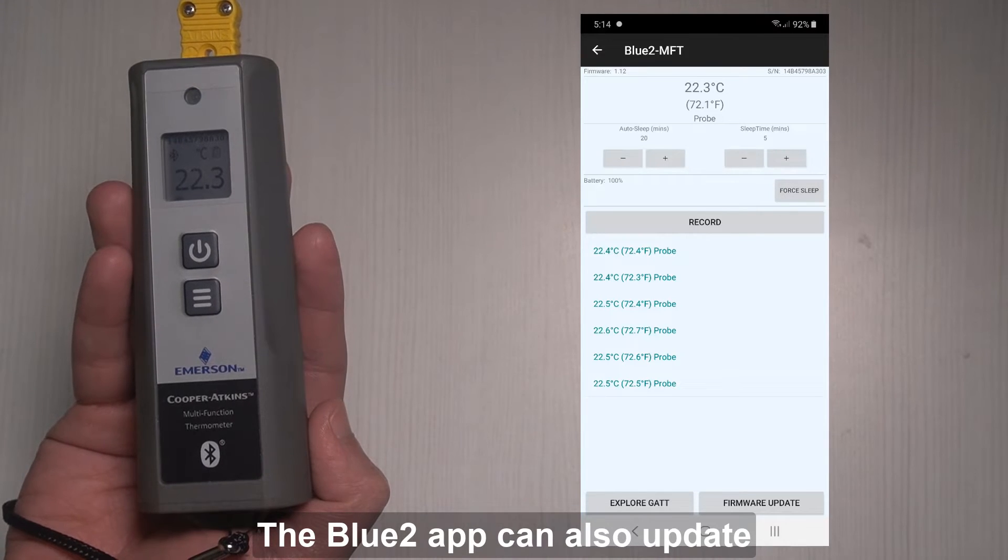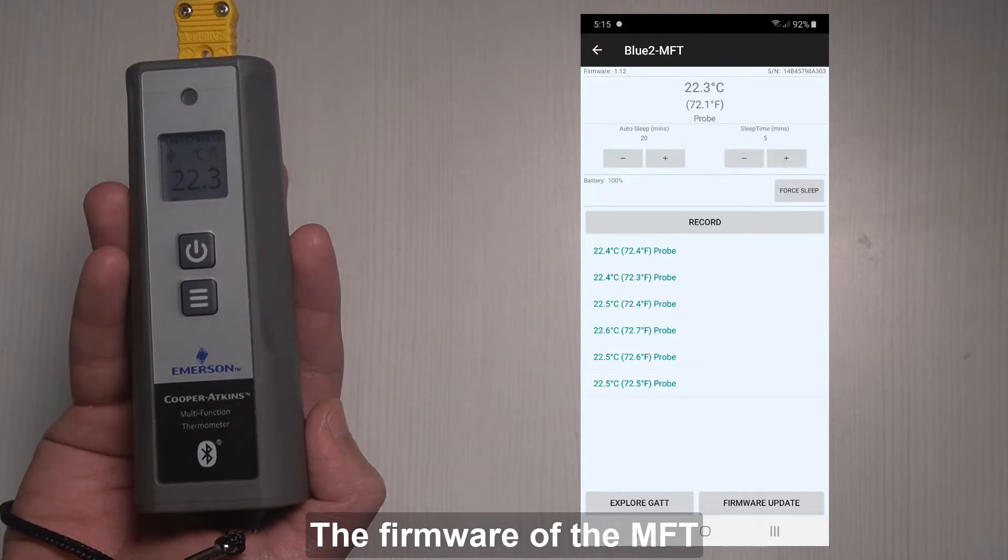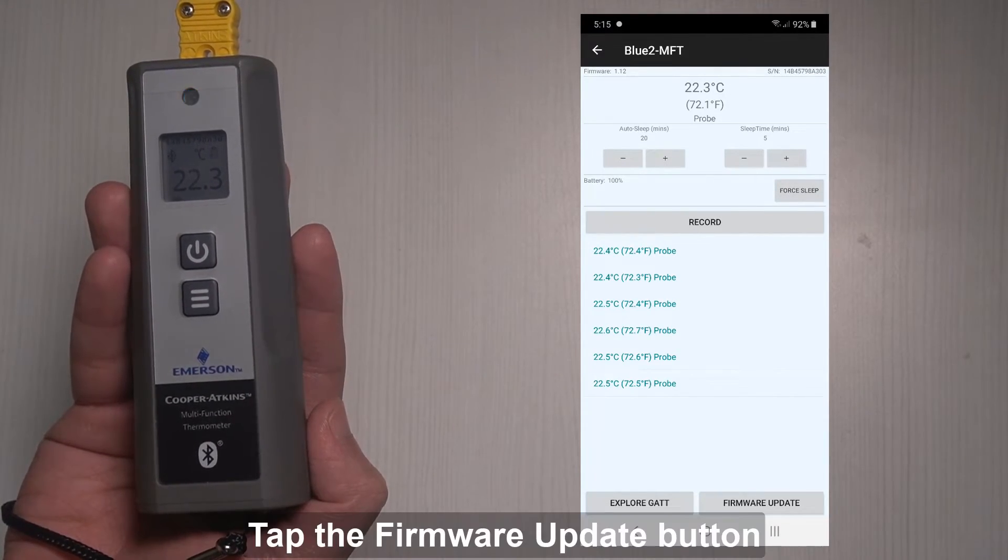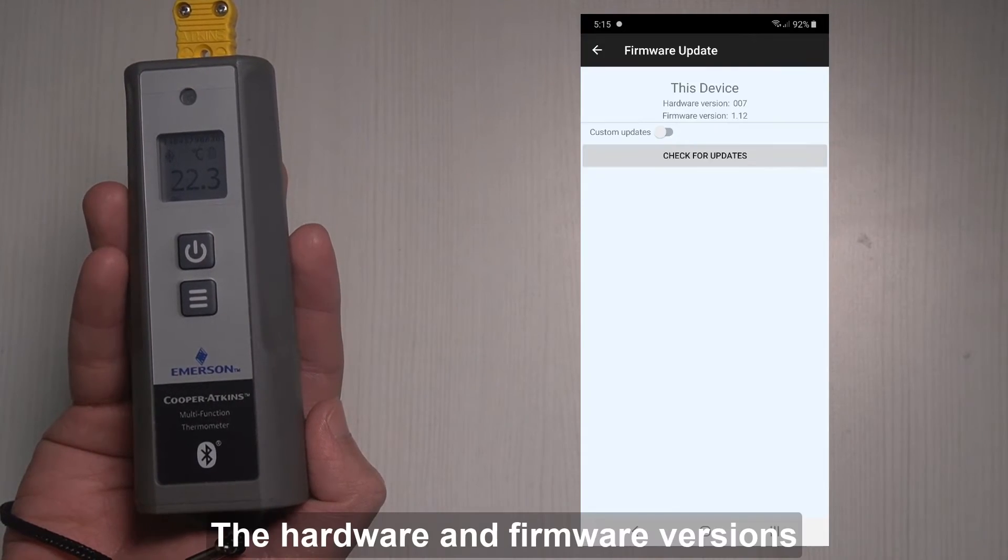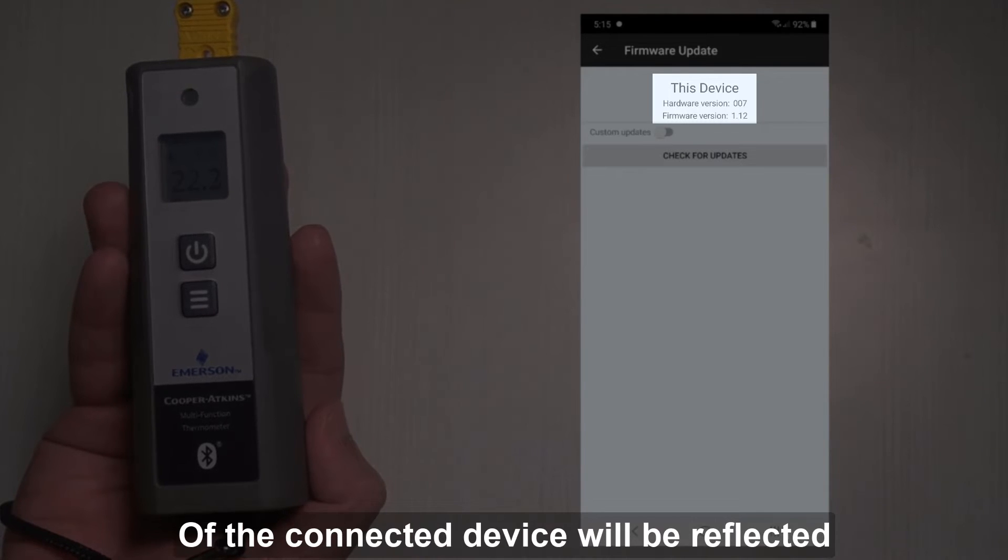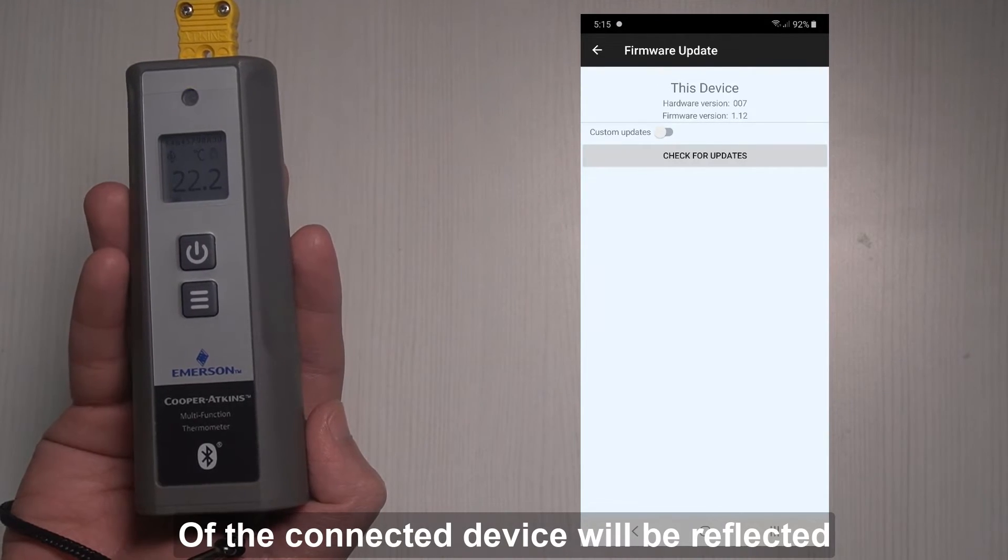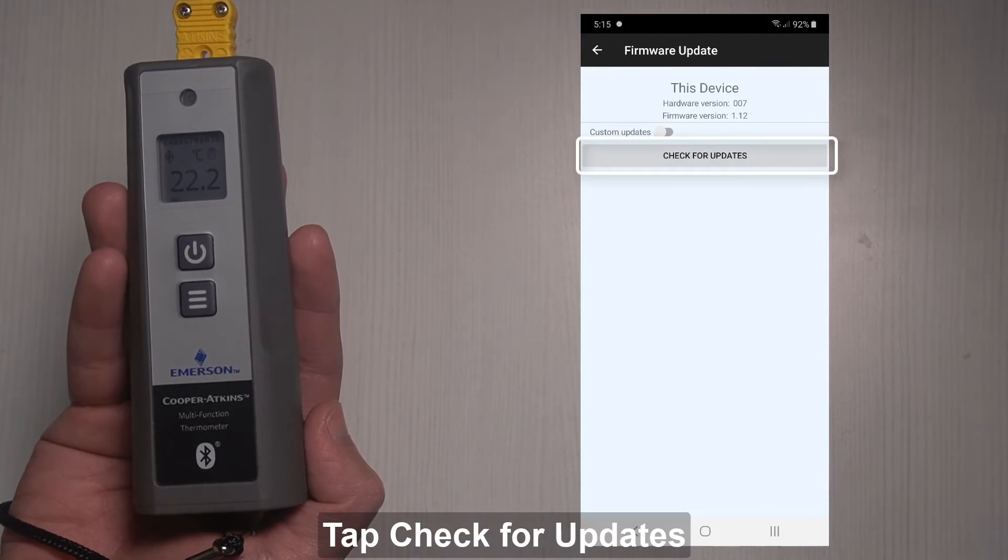The Bluetooth app can also update the firmware of the MFT. Tap the firmware update button at the mobile app. The hardware and firmware versions of the connected device will be reflected. Tap check for updates.